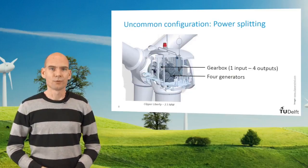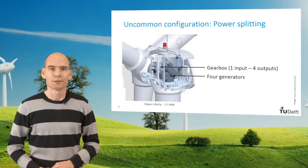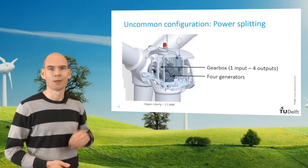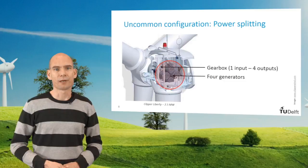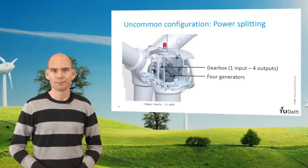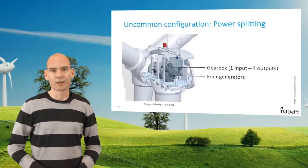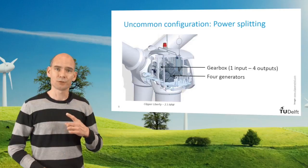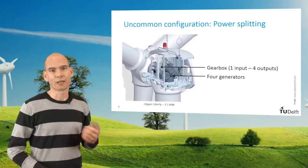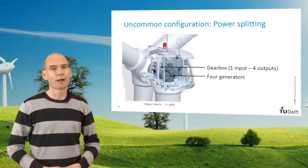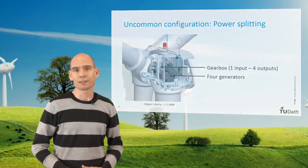The last drivetrain configuration shown here is the exception to the rule that all components are aligned sequentially. Here you see four generators that are connected in parallel to the four outgoing shafts of the gearbox. Each generator has a quarter of the power rating of the turbine. In case one of the generators fails, the turbine can continue operation but with a slightly reduced performance. This drivetrain illustrates that new ideas keep emerging and old ideas are revisited, especially to deal with particular demands for offshore turbines. Every once in a while such an idea gets taken further than just the drawing board, and we may therefore see more changes in the future.